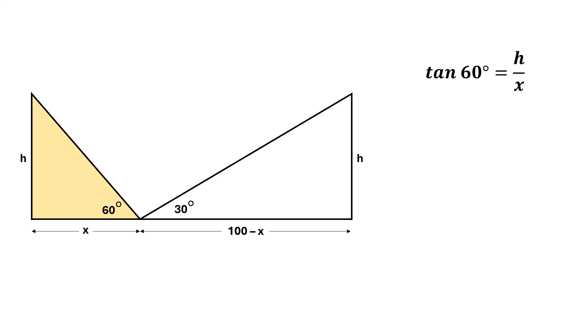As the value of tan 60 degrees is square root of 3, we can rewrite our expression as square root of 3 equals h over x. So we can write, x equals h over square root of 3.